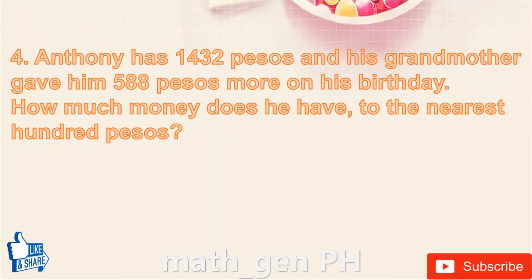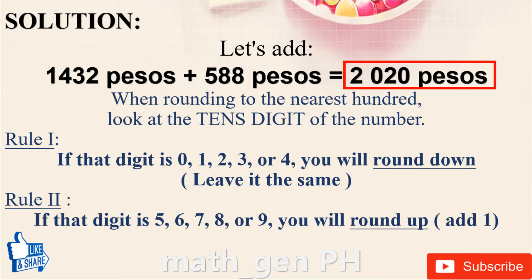Question number 4: Anthony has 1,432 pesos and his grandmother gave him 588 pesos more on his birthday. How much money does he have to the nearest hundred pesos?